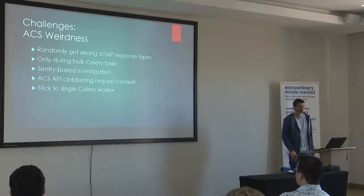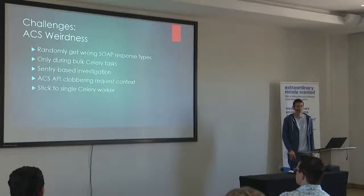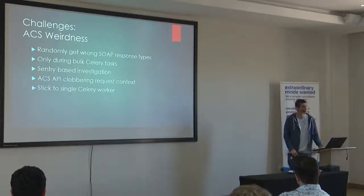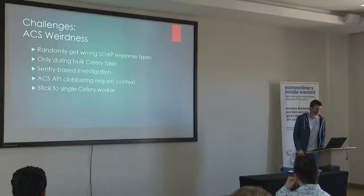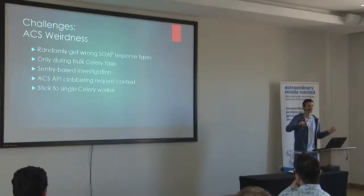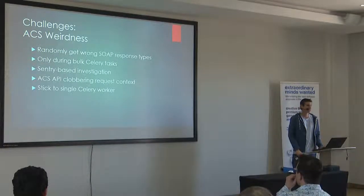Other ACS weirdness: there's some Java in the FriendlyTech ACS. They sometimes sent us the wrong SOAP response types — we'd say 'please send me your firmware version' and we'd get device info back. This was only happening during bulk Celery tasks: fire off a couple thousand tasks and suddenly Sentry shows a third of your tasks failed. Turns out the ACS API was clobbering our request context — just receiving requests and sending responses without really matching up which request corresponded to which response. We ended up saying no, we're going to keep this simple, skip concurrency with Celery, and use a single worker so we don't overwhelm the ACS.